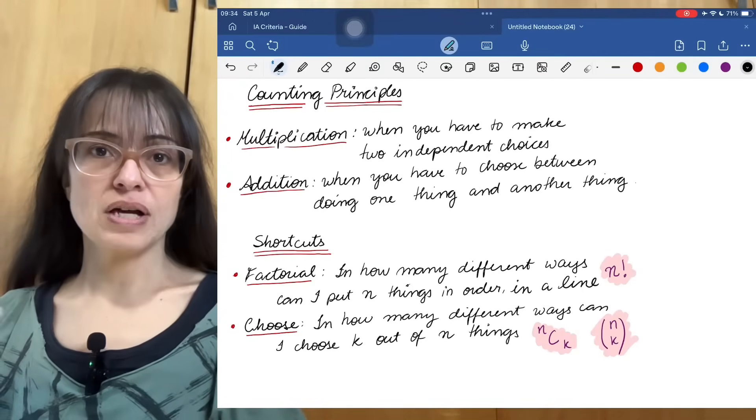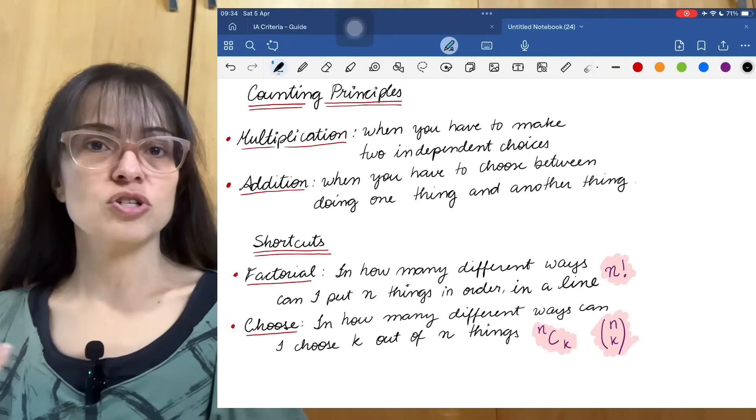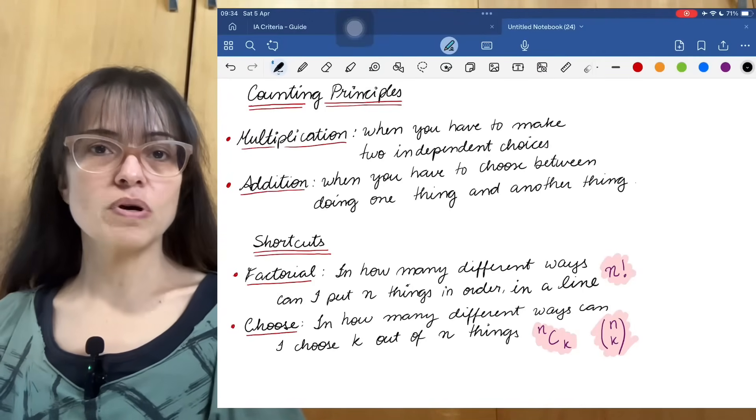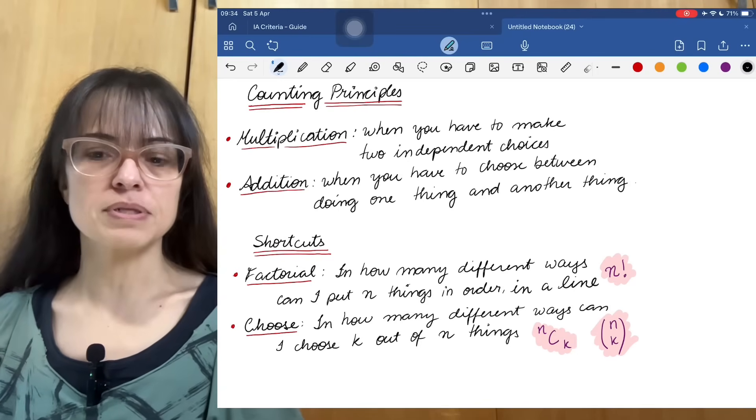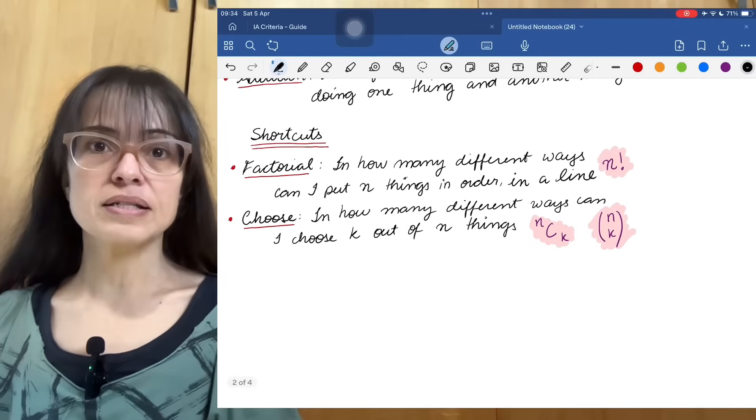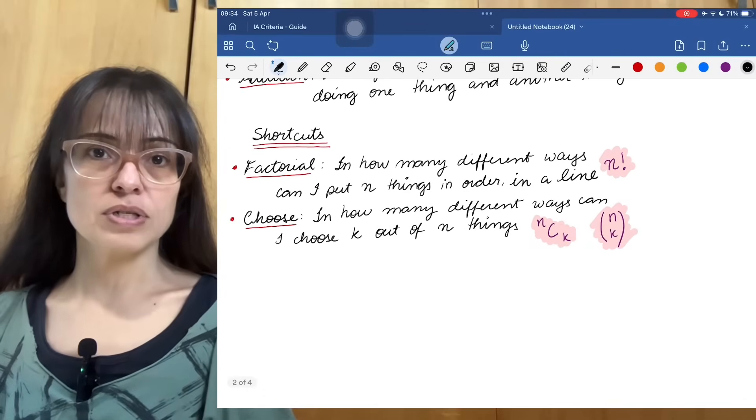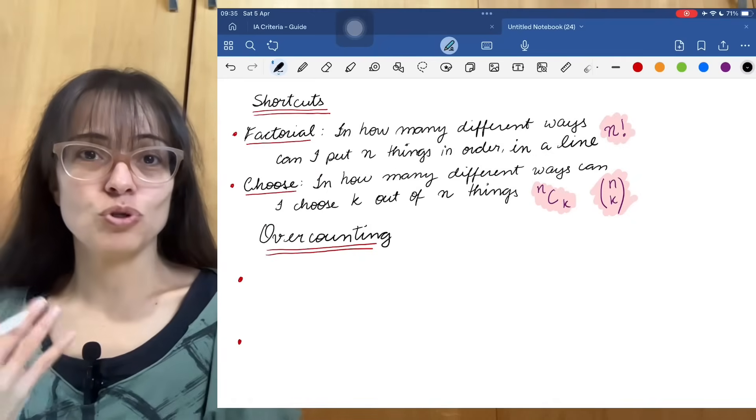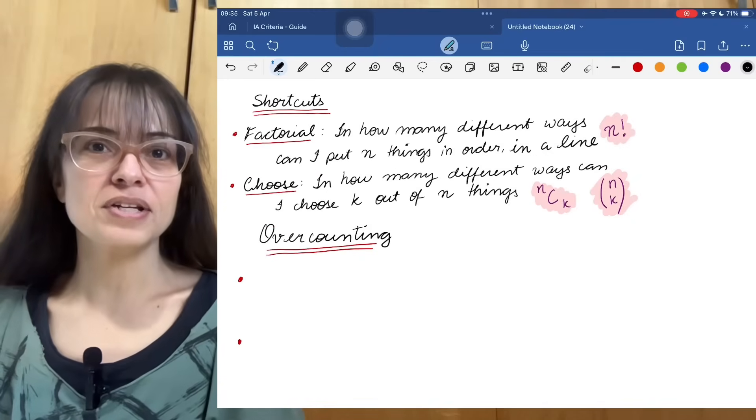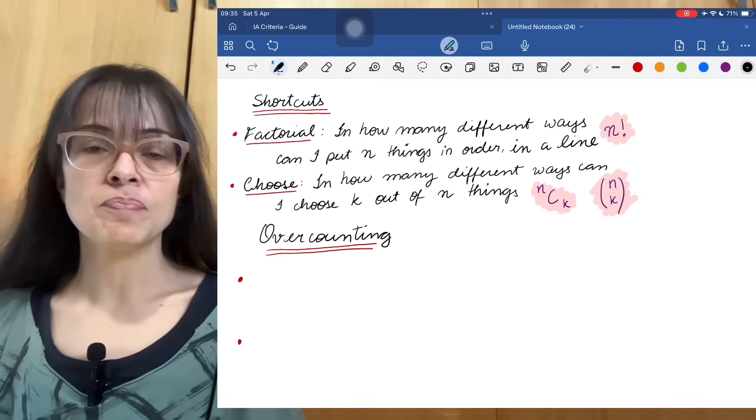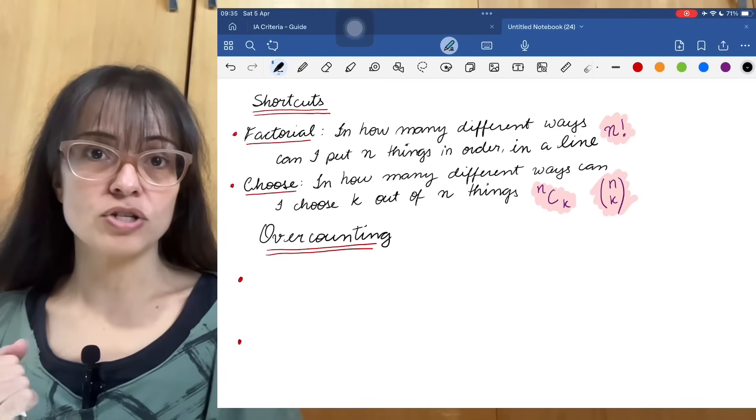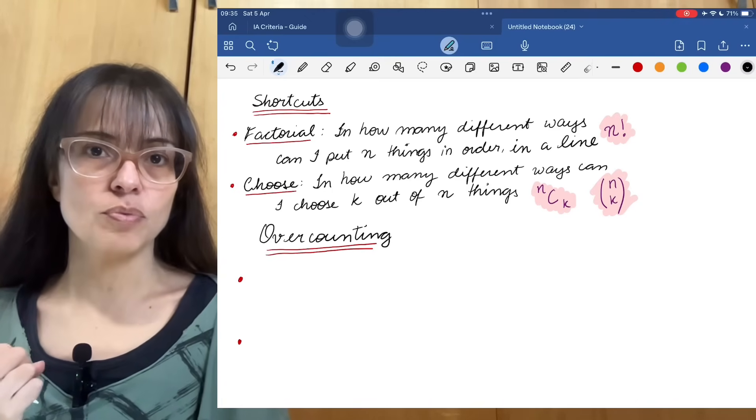In the first video, we talked about the counting principles of multiplication and addition, and I also told you about these two shortcuts, which can be very useful for solving counting problems. Today, I would like to add to that by talking about overcounting. So overcounting is when you count too many things, like more than you wanted, and it can sound like it was a mistake when I say it like that, but actually overcounting is a strategy, and there are two types of overcounting that I want to mention.